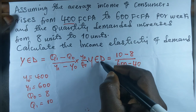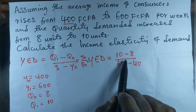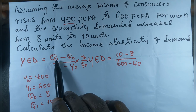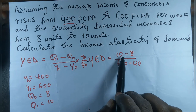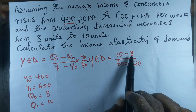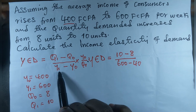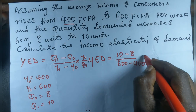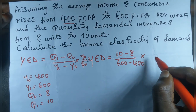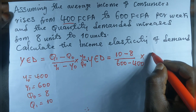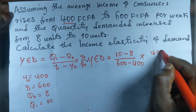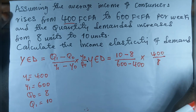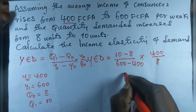The income elasticity of demand, YED, equals — we substitute our figures into the formula. Qd1 is 10 and Qd0 is 8, so we take 10 minus 8. Then Y1 is 600, so we put 600 minus 400. All that multiplied by Y0, which is 400, divided by 8 — our initial quantity demanded.